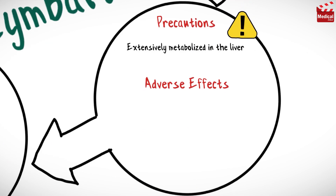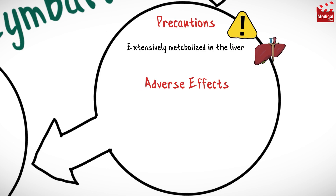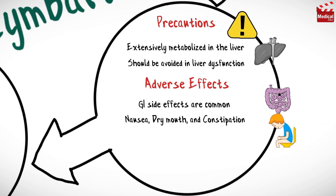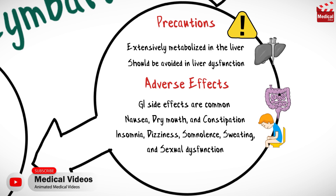Duloxetine is extensively metabolized in the liver to inactive metabolites and should be avoided in patients with liver dysfunction. Gastrointestinal side effects are common, including nausea, dry mouth, and constipation. Insomnia, dizziness, somnolence, sweating, and sexual dysfunction are also seen.